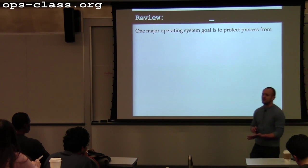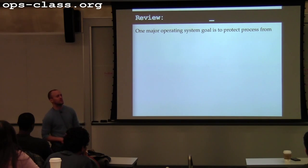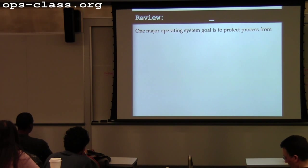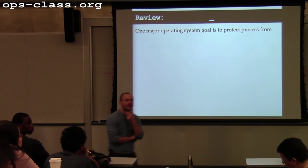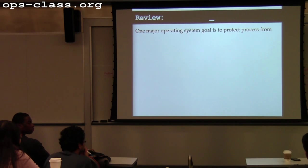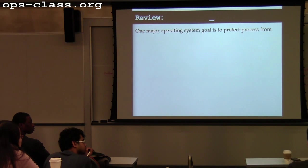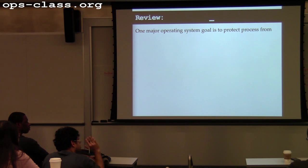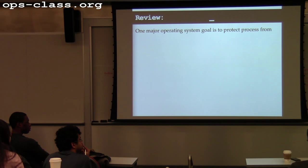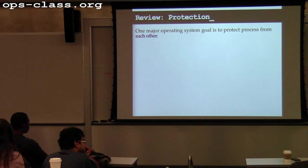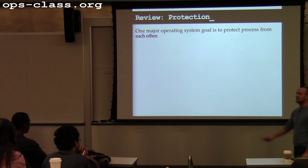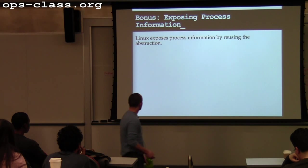One major goal of the operating system — at minimum, what would I like my OS to do for processes? Protect them from molestation — from having someone picking on them. No other process writing into my address space. You put that process over there in its corner and this one in his corner. That's essentially what we just talked about.